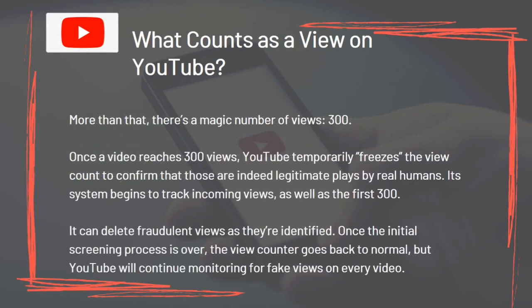There's a magic number of views — 300. Once a video reaches 300 views, YouTube temporarily freezes the view count to confirm those are indeed legitimate plays by real humans. Its system tracks incoming views as well as the first 300 and can delete fraudulent views as they're identified. Once the initial screening process is over, the view counter goes back to normal, but YouTube continues monitoring for fake views on every video.